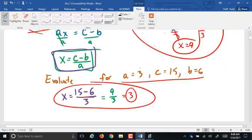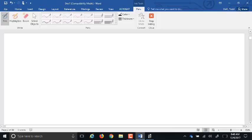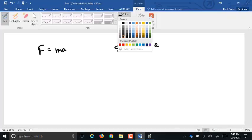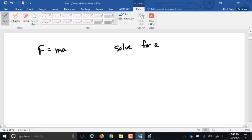So let's say I have a formula like F equals MA. I want to solve it for A. What do I have to get rid of? The M. I'm going to get rid of it by dividing. M is multiplying the A. I get rid of it by dividing. So F divided by M is just F over M equals A.